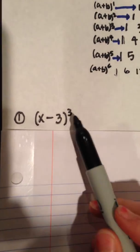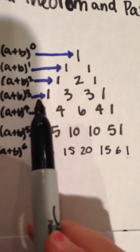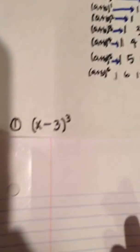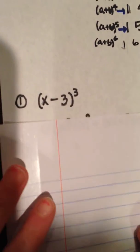Since the exponent is three, we look to this line in Pascal's triangle, which is one, three, three, and one, which are the numbers that we will be multiplying our terms by.